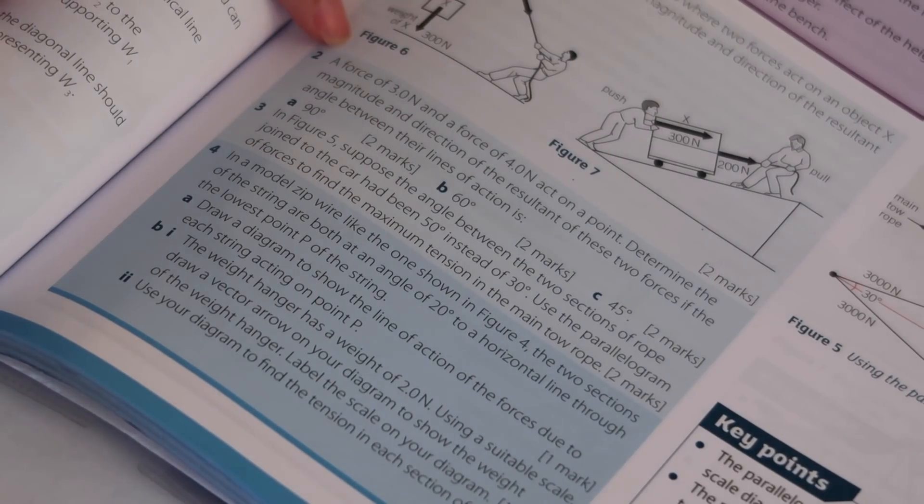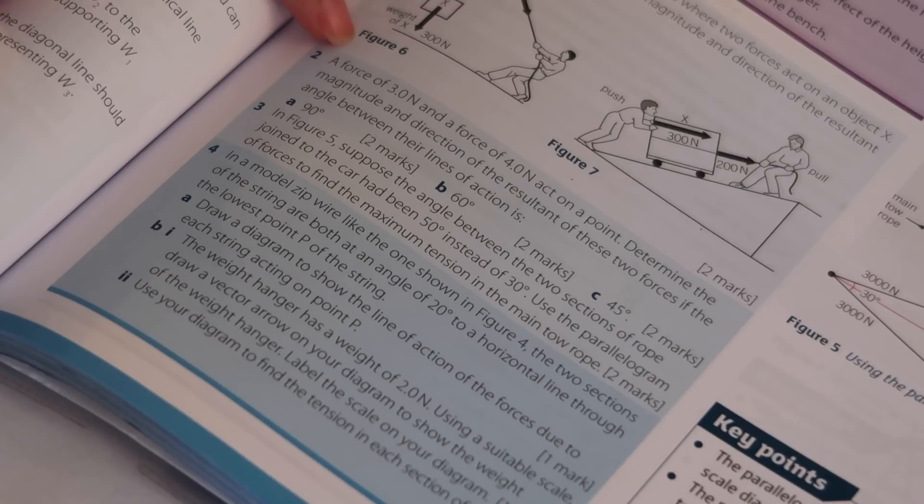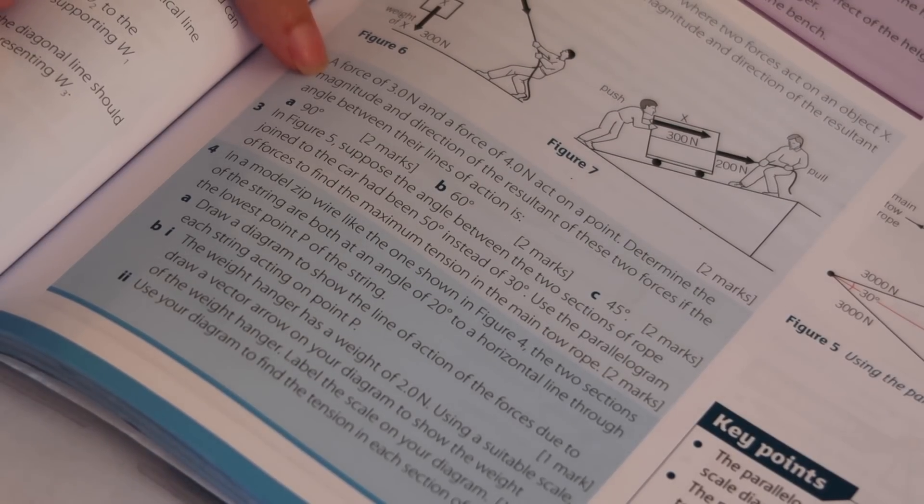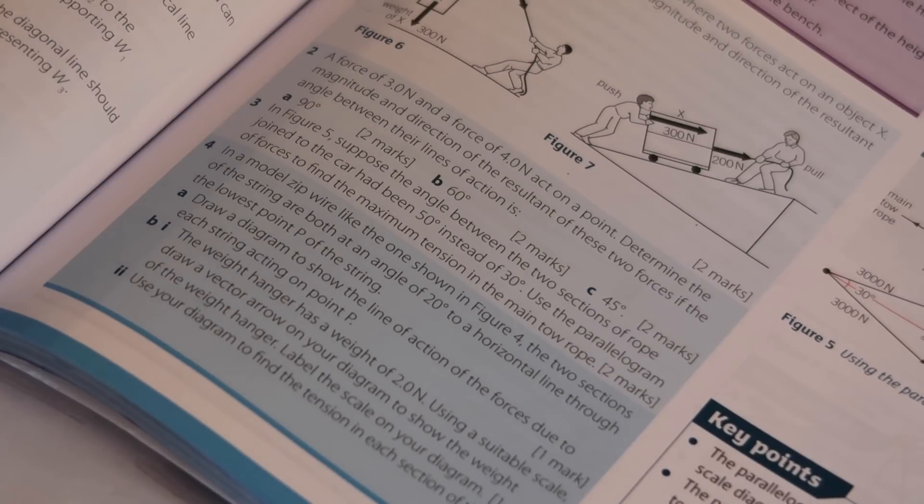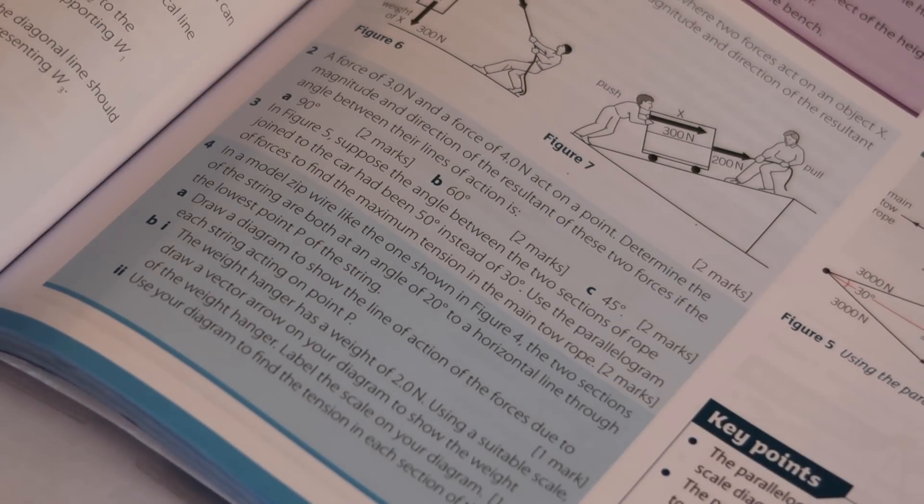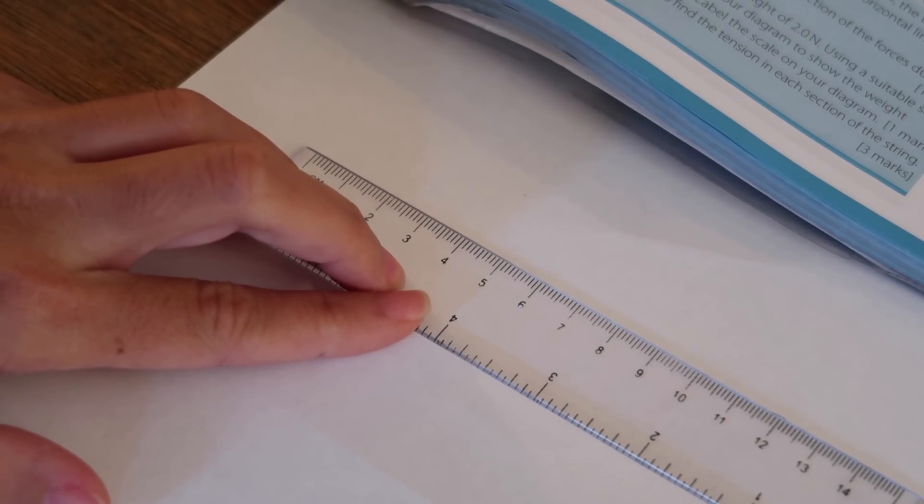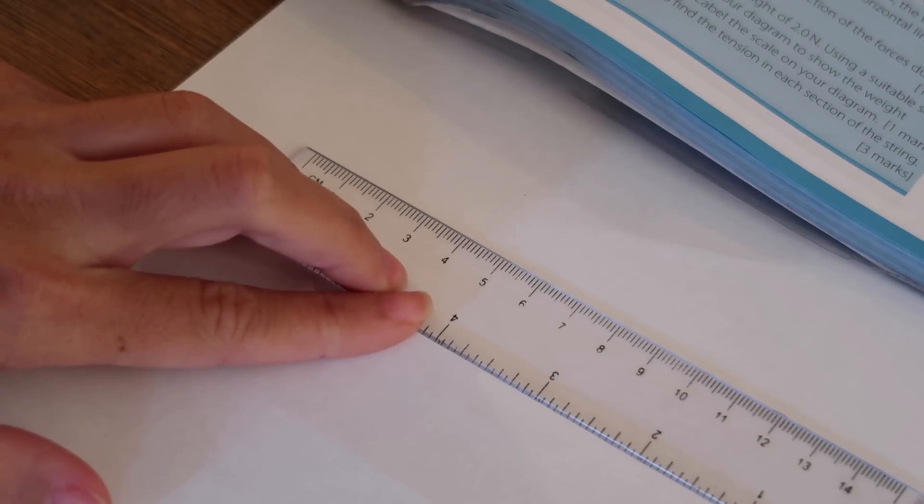Now I'm going to show you when to use the parallelogram of forces. A force of 3 newtons and a force of 4 newtons act on a point. Determine the magnitude and direction of the resultant of these two forces if the angle between their line of action is. I probably should have mentioned it before but magnitude is literally just the size of the force. In order to do this you will need your ruler. You'll need to choose a sensible scale. So I'm going to choose 1 centimeter to represent 1 newton.